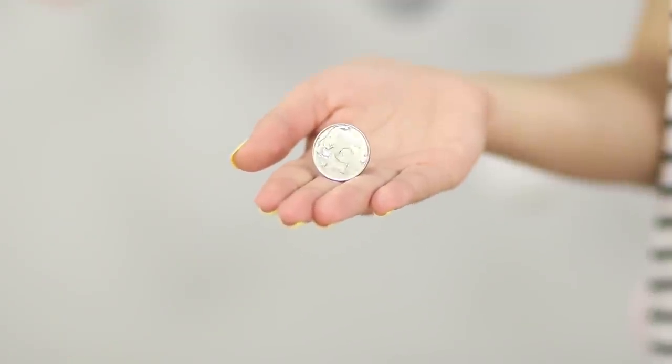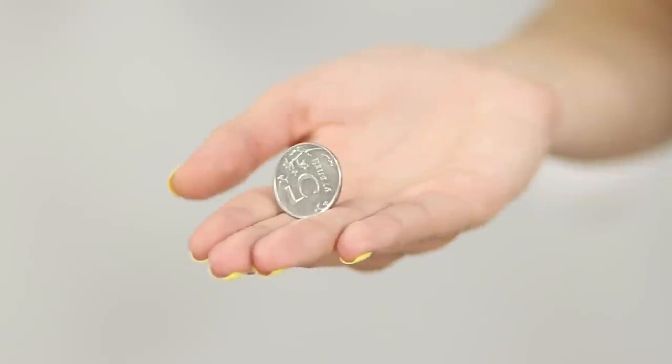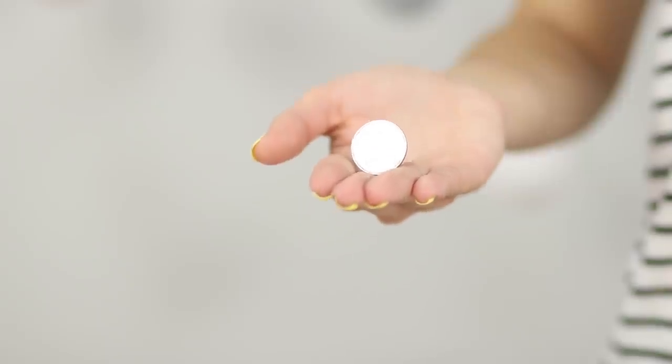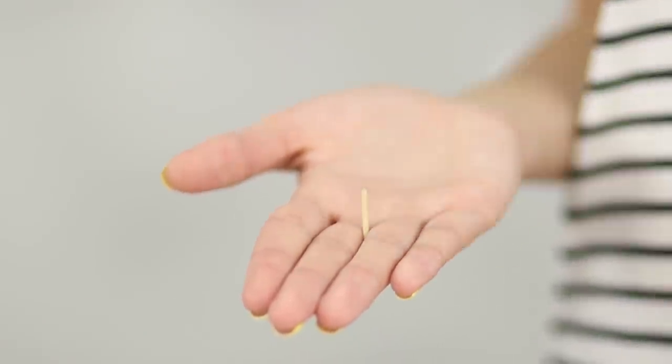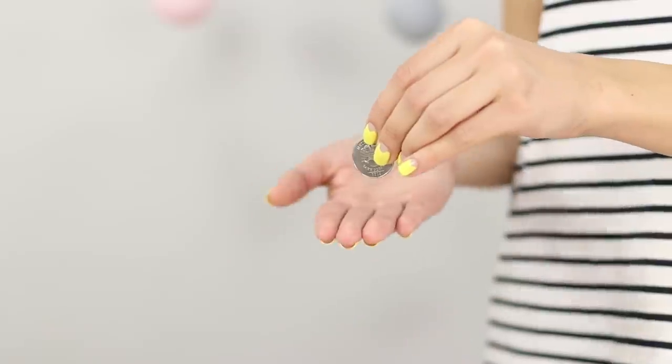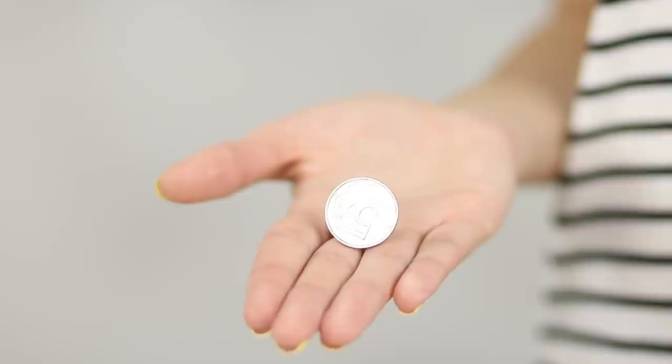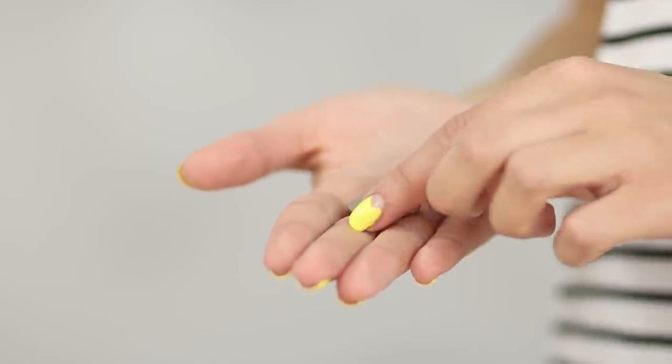The coin stands confidently in the palm of your hand. And can you manage to keep it? True, there is one secret. Insert a piece of a match between the middle finger and the ring finger. The coin is supported by the match and at the right moment it deftly hides between the fingers.